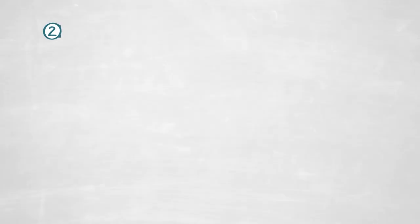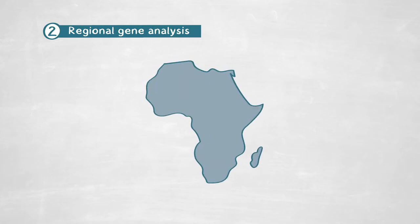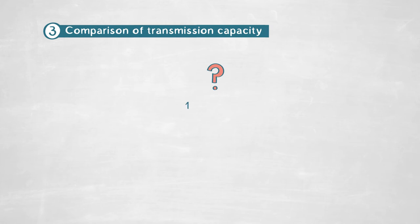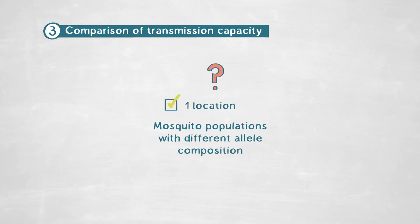For that, we went back to Africa and looked at different forms of this gene in different areas in West, Central, and Eastern Africa. We found that different forms indeed exist in these populations, and that in areas with high transmission, there are very particular forms of this gene. We then asked whether we could go to a single location in Africa with mosquito populations having differences in the allelic composition of this gene and compare their transmission capacity.